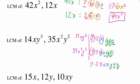So our final answer is going to be 7 times 2 times 5, or 70, and then x times x, which is x squared, and then y times y times y, which is y cubed.